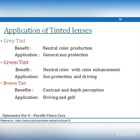The gray tinted lens is neutral in color perception and provides protection from the sun without distorting color integrity. Green tint provides neutral color perception with color enhancement and general protection for driving. Brown tint provides contrast and depth perception by filtering blue light, and is also useful for bright sunlight, driving, and golf.